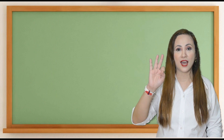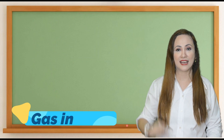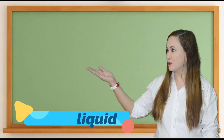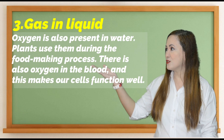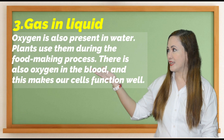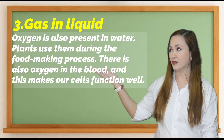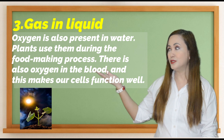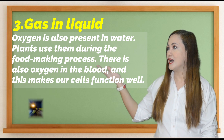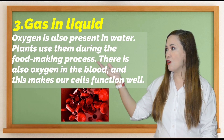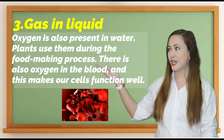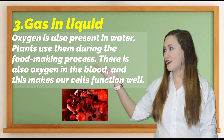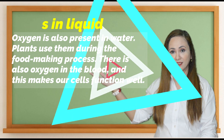The third one is gas in liquid. Oxygen is also present in water. Plants use it during the food-making process. There is also oxygen in the blood, and this makes our cells function well.